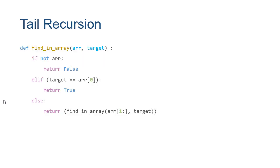Here's an example of a recursive function in Python, because recursion is not limited to Java or C. We use recursion a lot in functional languages like Scheme, and also in multi-paradigm languages like Python. This function takes two parameters, an array and a target, and returns true or false based on whether the target appears in the array.